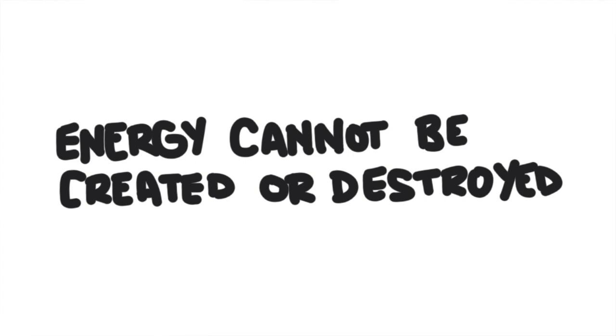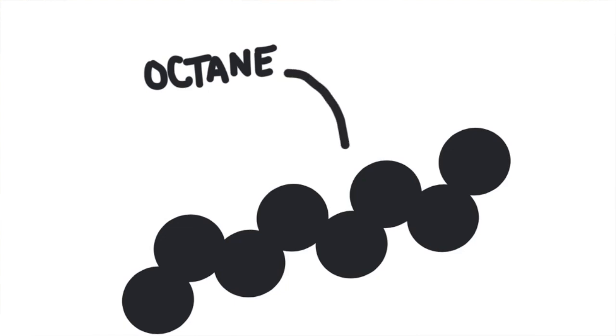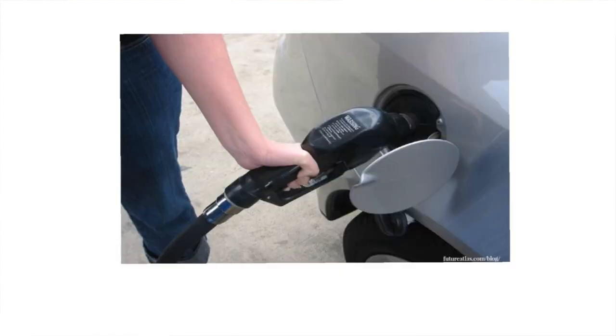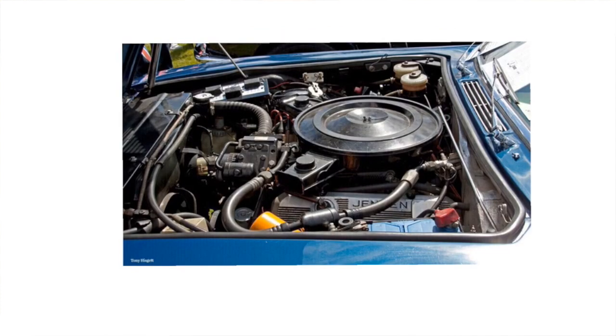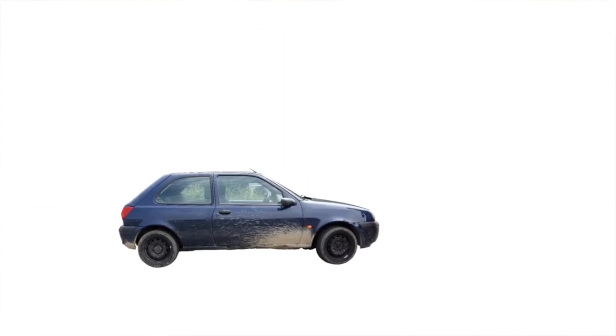We'll leave our discussion of energy with this: energy cannot be created or destroyed. Energy is constantly being converted into other forms of energy, but it's always conserved. For example, the chemical potential energy in the chemical bonds of the molecule octane — that is gasoline — can be converted into thermal energy inside our car engine, which is then converted into mechanical energy to make our car move.